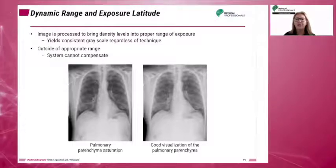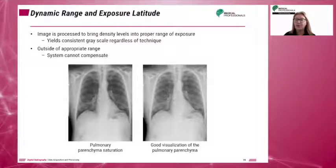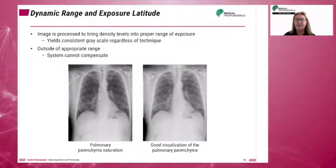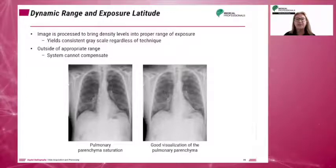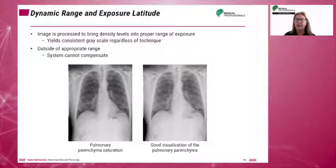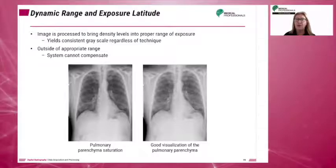In film screen imaging, an error in selecting MAS by as little as 30 percent is noticeable, and a 50 percent error usually requires a repeat image. In digital imaging, the system can tolerate as much as 60 percent underexposure and as much as 500 percent overexposure.